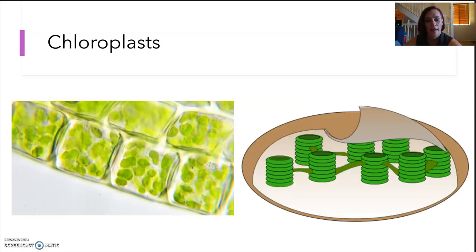Chloroplasts, we've seen before, they are often bright green. They contain chlorophyll, which is a light-trapping pigment, and they are plant cell specific. So photosynthesis is occurring here.